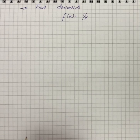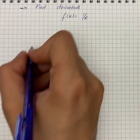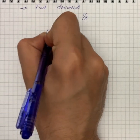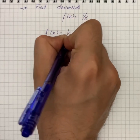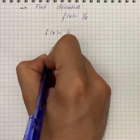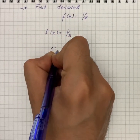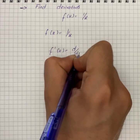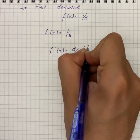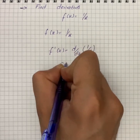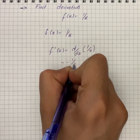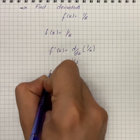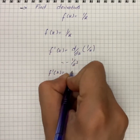Here we have a question — we have to find the derivatives. First of all, the given is f(x) = 1/x. So we can write that f'(x) = d/dx of 1/x, which gives us -1/x².